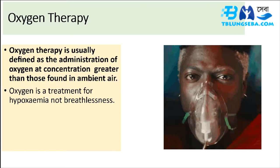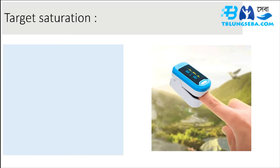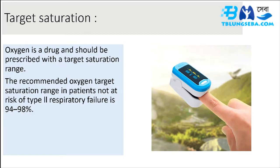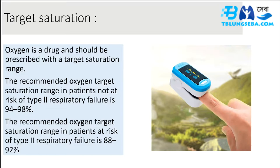Oxygen is a drug and should be prescribed with a target saturation range. The recommended oxygen target saturation range in patients not at risk of type 2 respiratory failure is 94 to 98%. The recommended oxygen target saturation range in patients at risk of type 2 respiratory failure is 88 to 92%.